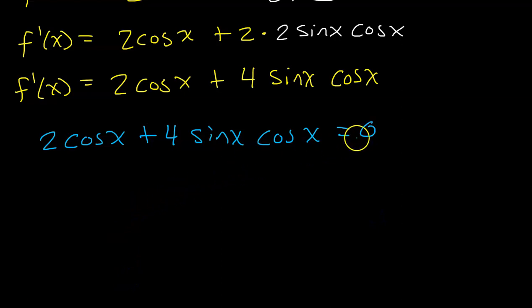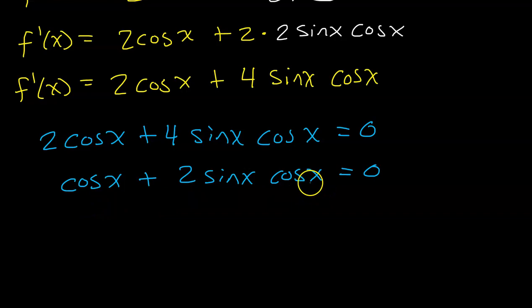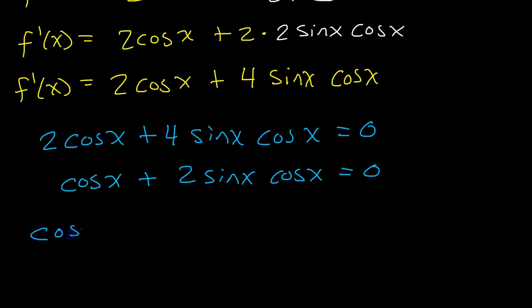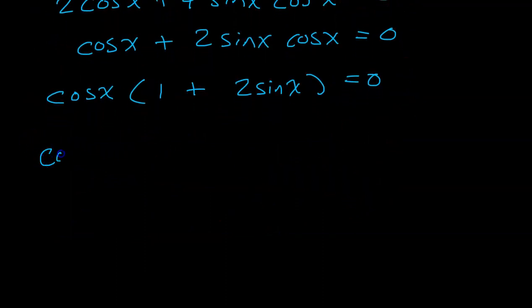Let's set f'(x) equal to zero and solve to find our critical numbers. Notice that both terms have a factor of 2, so we divide both sides by 2 to get cos(x) + 2 sin(x) cos(x) = 0. Do not divide by a trig function — you might be tempted to divide by cosine, but instead, factor out the GCF. Pull out the common cosine factor: cos(x)(1 + 2 sin(x)) = 0.